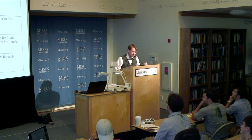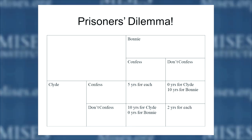It's a logical working out of the consequences of the fact that we're applying means to attain our ends. Let's look at the traditional prisoner's dilemma. We have two criminals — Bonnie and Clyde — who commit some crime together. The police catch them, take them into separate rooms, and give them each a plea bargain: they can either confess or not. If they both confess, they each get five years in prison.